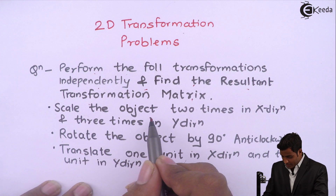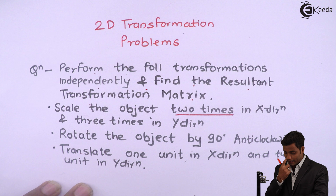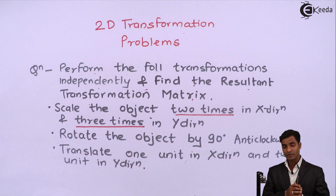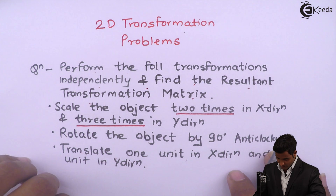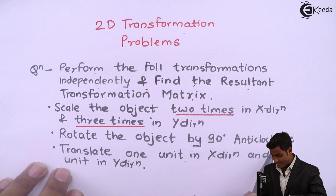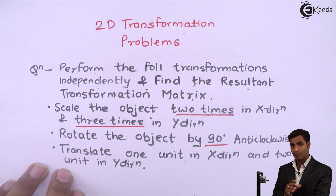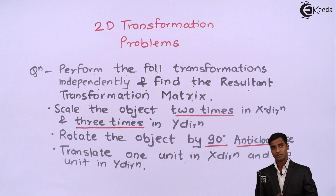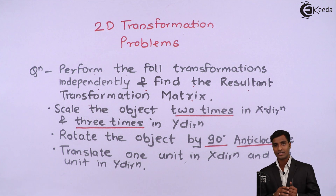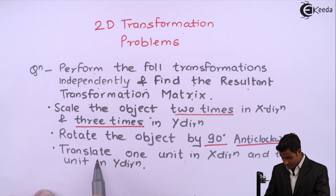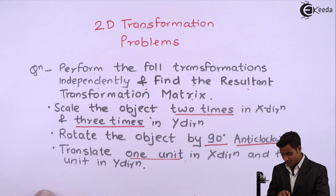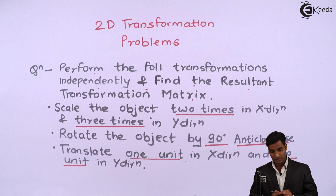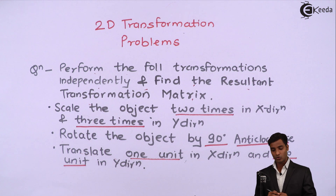First, we have to do scaling — scale the object 2 times in the x direction and 3 times in the y direction. Second, rotate the object by 90 degrees anti-clockwise, so theta is 90 degrees. The sign is important in rotation; since it is anti-clockwise, we take theta as negative. Third, translate 1 unit in the x direction and 2 units in the y direction.